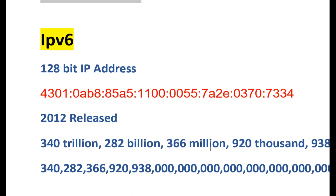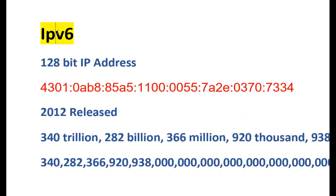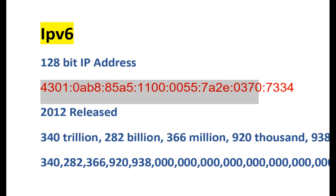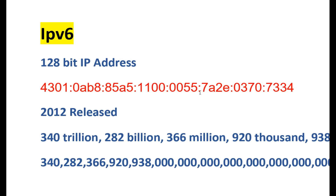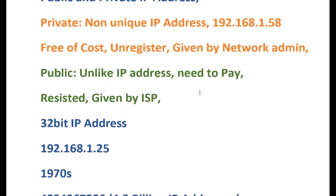In that case, you can use IPv6. IPv6 is a 128-bit IP address. Unlike IPv4, IPv6 addresses are available in alphanumeric format — using letters A, B, C, D as well as numeric numbers.